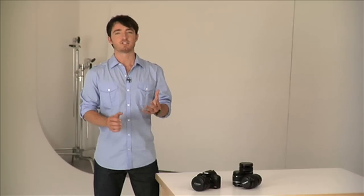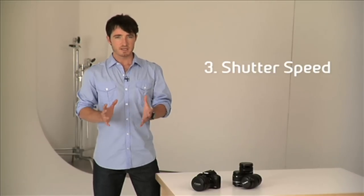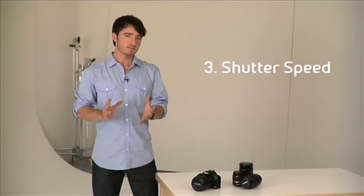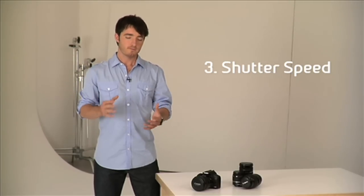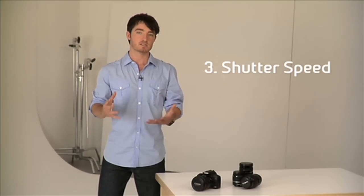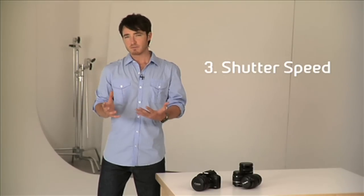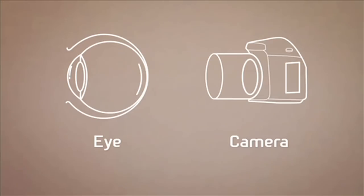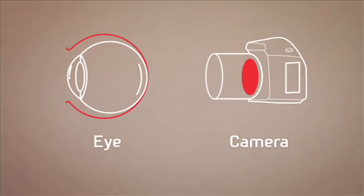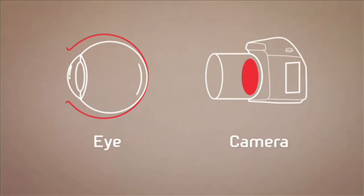Now onto shutter speed. Shutter speed is measured in fractions of a second, and it's the amount of time that the shutter is open for each time you take a photograph. The larger the number, the faster the shutter speed. If we relate this back to our eye, it's similar to the eyelid — of course, our eyes are seeing constant motion, so they're always open rather than opening and closing as it does in a still camera.